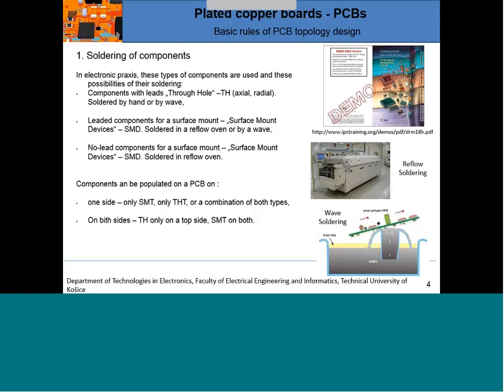Wave soldering, which only more experienced or older engineers may know, uses a solder bath heated to melting temperature with additives. The PCB moves toward the wave of solder — the solder is agitated from the bottom creating a wave, and as the solder touches the PCB from the bottom, the components are soldered. This method was used from the beginning of electronics and is still used today, but it is mainly suitable only for THT components.